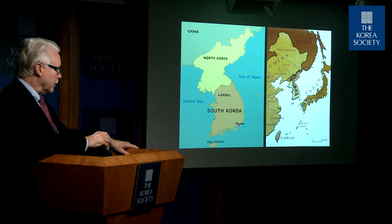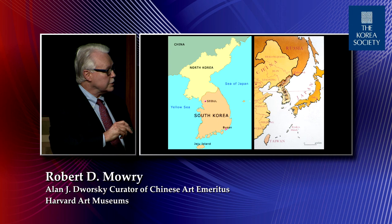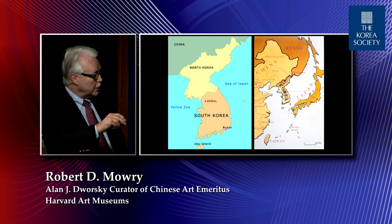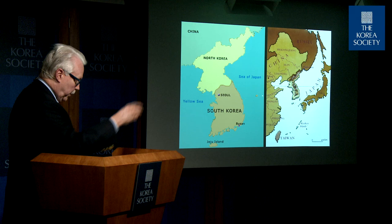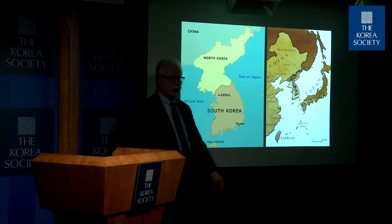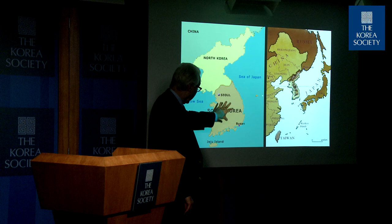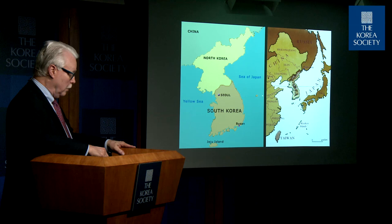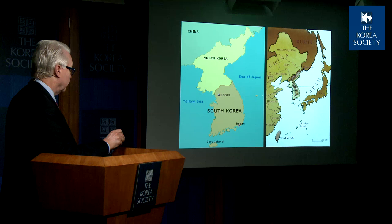In case there are any people who are new to the field of Korean art, Korea is in Northeast Asia — China over here, Korea is a peninsula between China on the left and Japan over here. Korea today is divided on the 38th parallel into North Korea, the Democratic People's Republic of Korea, and South Korea. This division has existed only since World War II and the partition after the period of Japanese Colonialism.